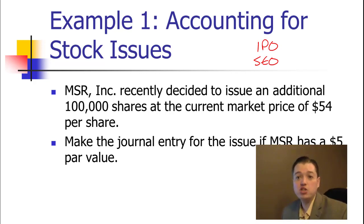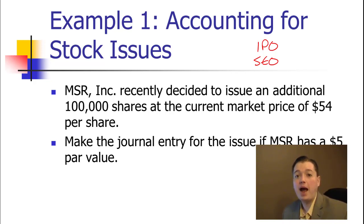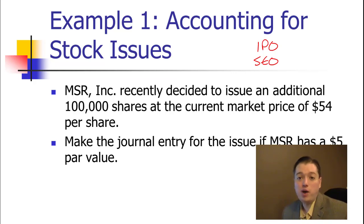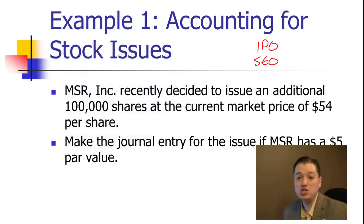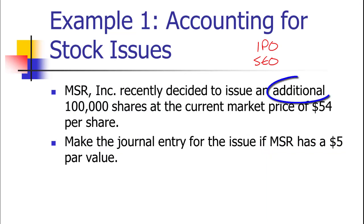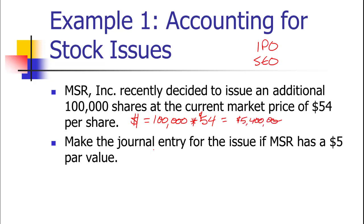An IPO is the initial public offering — the first time a company sells stock on the open market. It's governed by the SEC, heavily regulated, and there's a lot going on with an IPO. An SEO is a seasoned equity offering — it's when we go back to the market and sell more stock. We have to get permission from the SEC, file forms, and give plenty of notice. It's the only way a corporation can raise capital: with either an IPO or an SEO. Since MSR is issuing additional shares, this is an SEO. The cash they'll receive is 100,000 shares times $54, giving MSR $5.4 million from this equity offering.